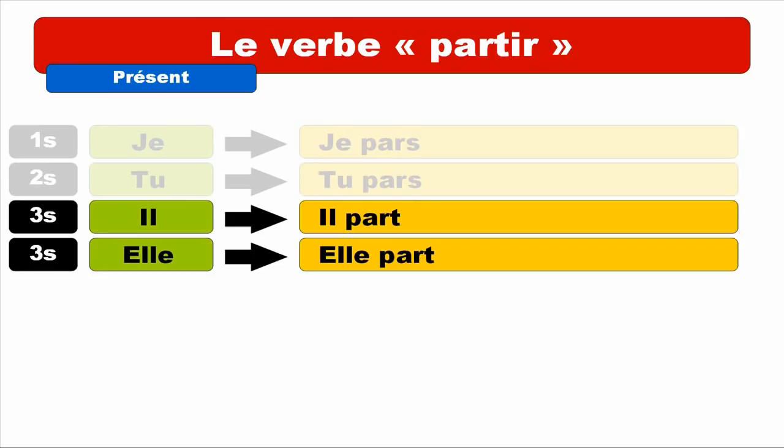As usual, quite often we've got the same form for JE, TU, IL, ELLE — the same pronunciation. For JE it's PAR, TU PART, IL PART, ELLE PART. But keep in mind you've got to write the final S for JE and TU, and the final T for IL and ELLE.